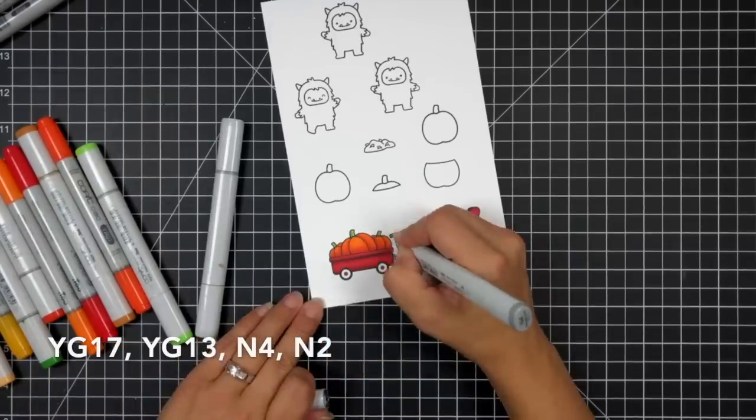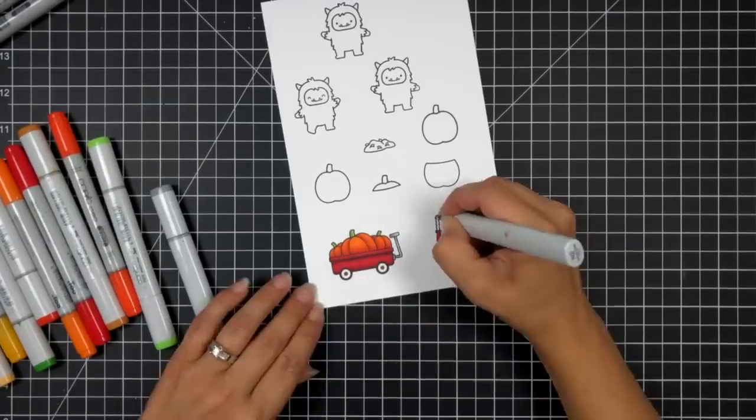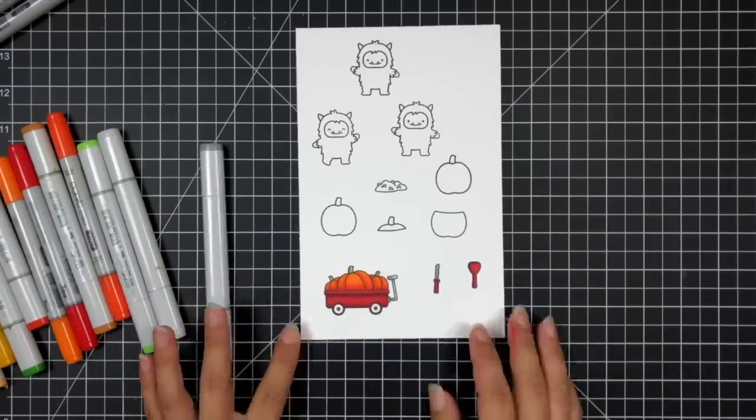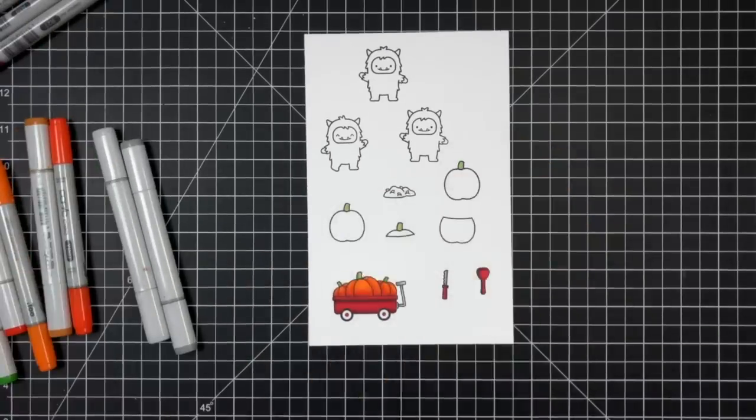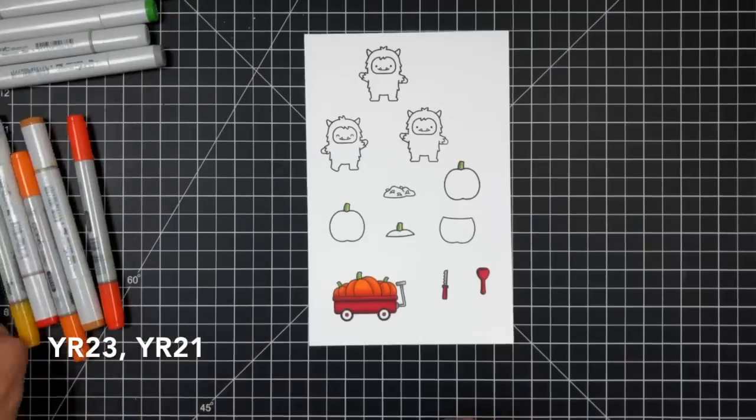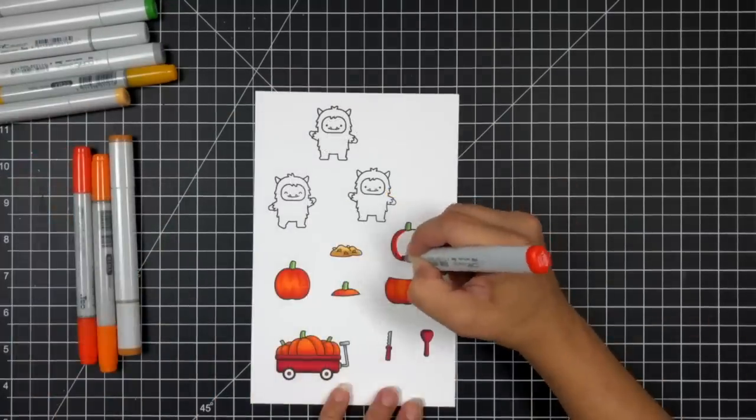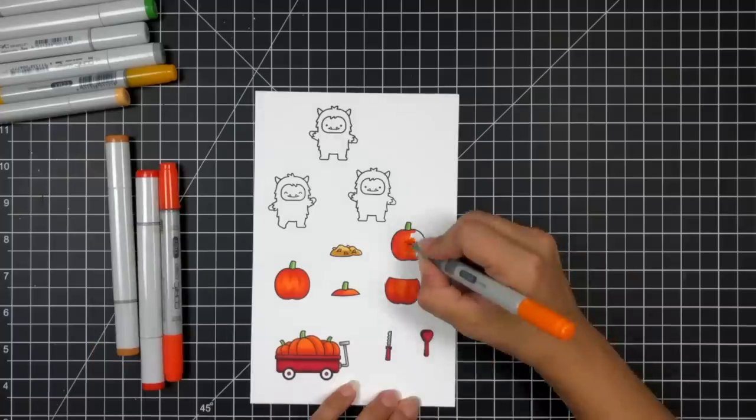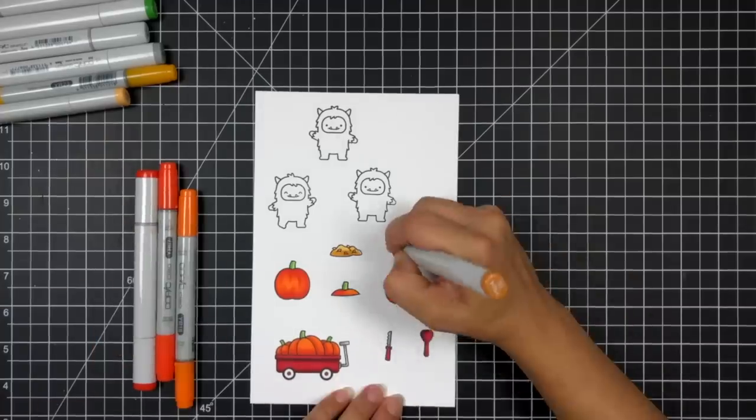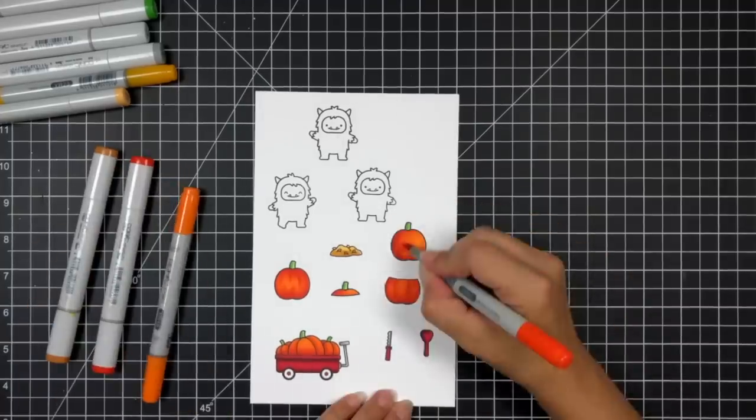My original plan was to use the squirrels from the Pick of the Patch stamp set and I had the yetis sitting out on my table and just thought it would be a really fun idea to have the yetis doing this. They are not only great for snow scenes but they can make cute little monsters so you could color them up in any color and make them a monster for Halloween.